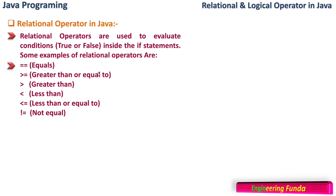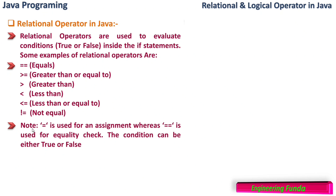We can use these operators for comparing two things and getting a result of either true or false. Note that the single equal to sign is used for assignment, whereas the double equal to sign is used for equality check. The condition can be either true or false.